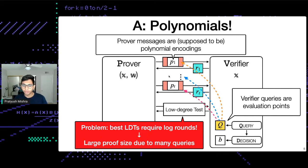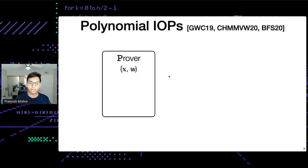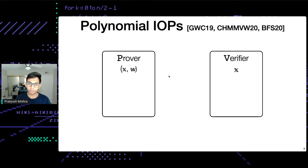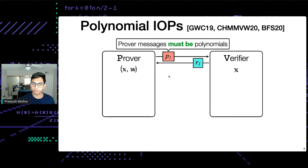What if we just get rid of the low-degree test entirely? What if we just assume that messages are polynomials instead of having to test for that? This leads to a recent model called polynomial IOP, introduced within the last couple of years. Here, as in the standard IOP model, the prover and verifier exchange messages, but now we just assume the prover messages are polynomials — multivariate, univariate, over different bases, coefficients, monomials — whatever. They just are polynomials.